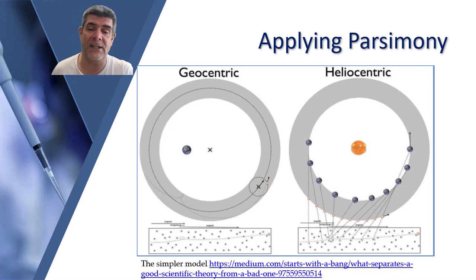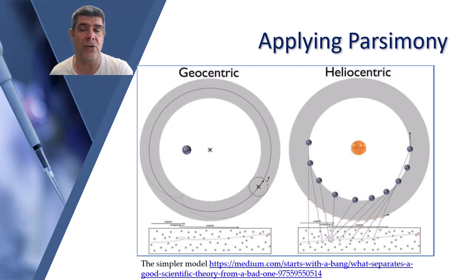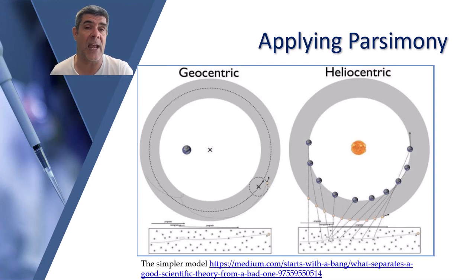Subsequent astronomical data confirmed the validity of the heliocentric model. Looking at the two figures, the one on the left shows the geocentric model and the one on the right shows the heliocentric model. The inset below each model shows the transit of a planet in retrograde motion against a backdrop of stars — that apparent backwards motion before the planet re-establishes its forward orbital motion. The geocentric model required the additional complexity of epicycles to account for retrograde motion, while the simpler heliocentric model did not. As we discovered more about the universe, Ptolemy's model became epicycles upon epicycles — a very complex way of explaining something that was calling out for a simpler, more parsimonious explanation.